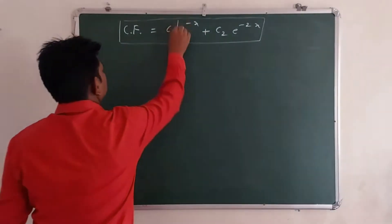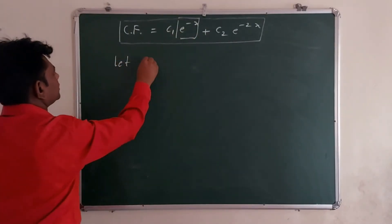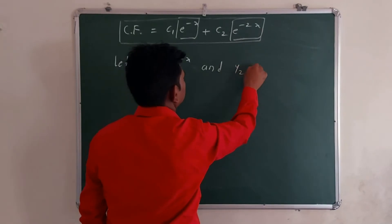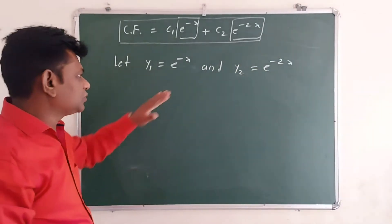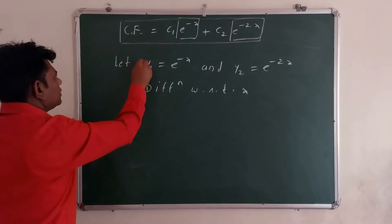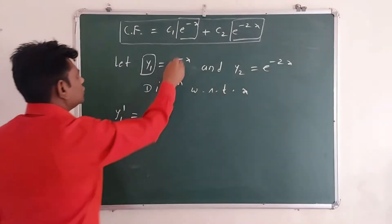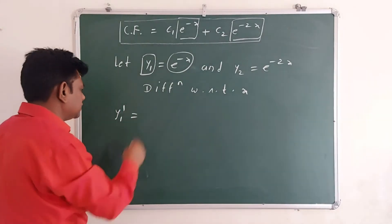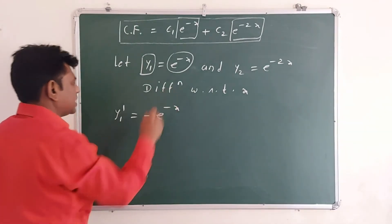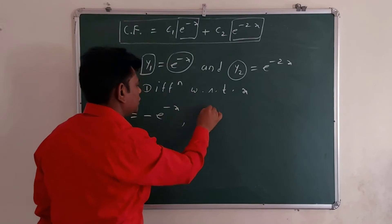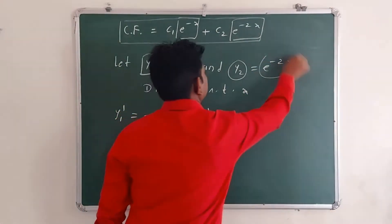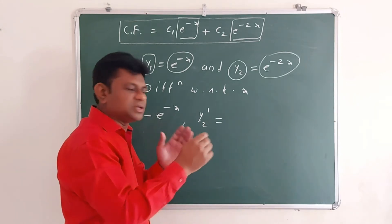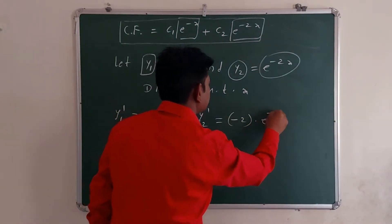Let y1 = e^(-x) and y2 = e^(-2x). Differentiating with respect to x: y1' = e^(-x) · (-1) = -e^(-x). Similarly, y2' = e^(-2x) · (-2) = -2·e^(-2x).